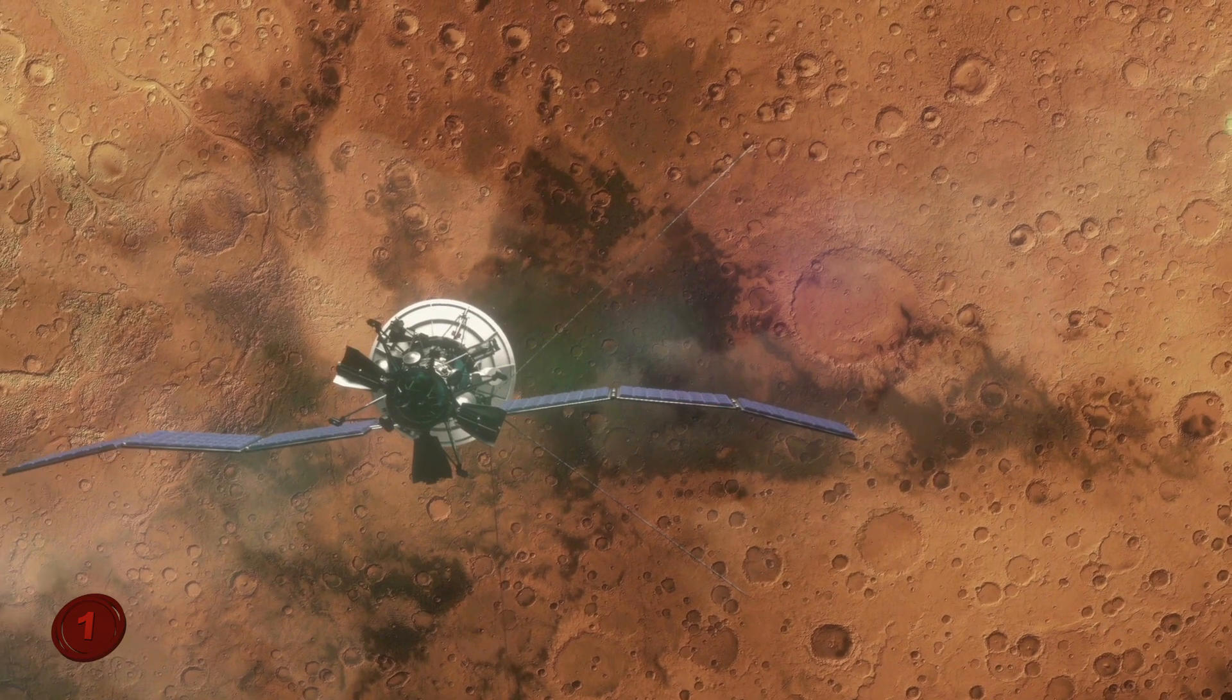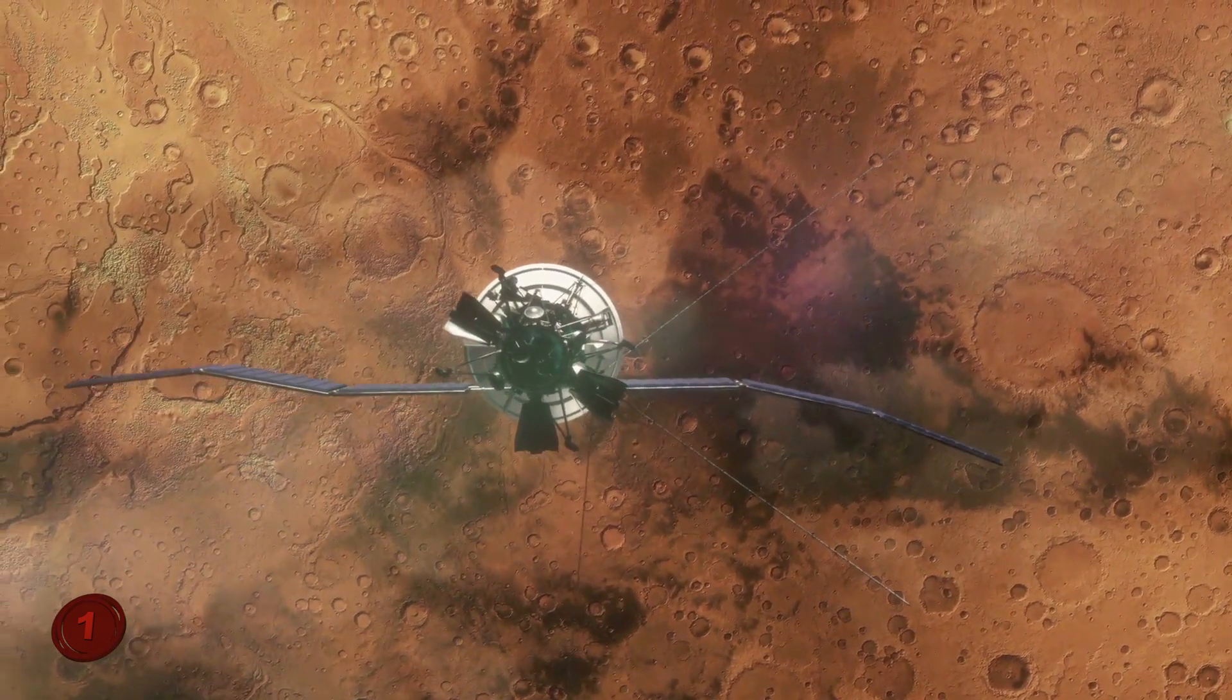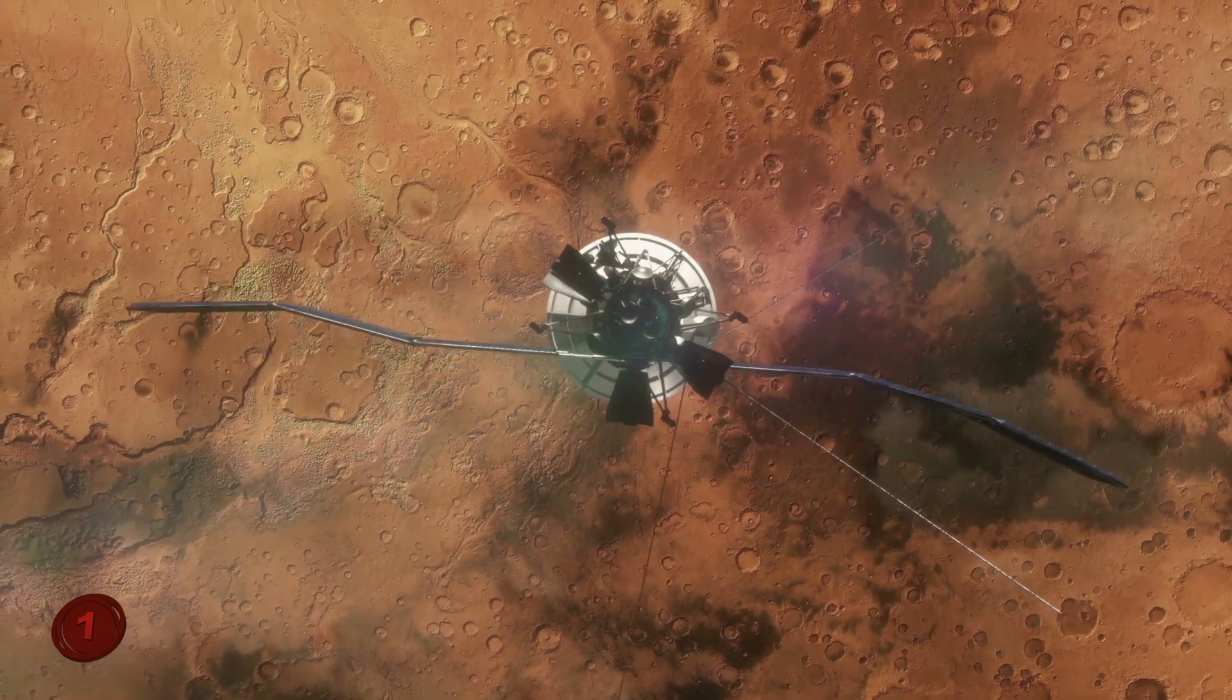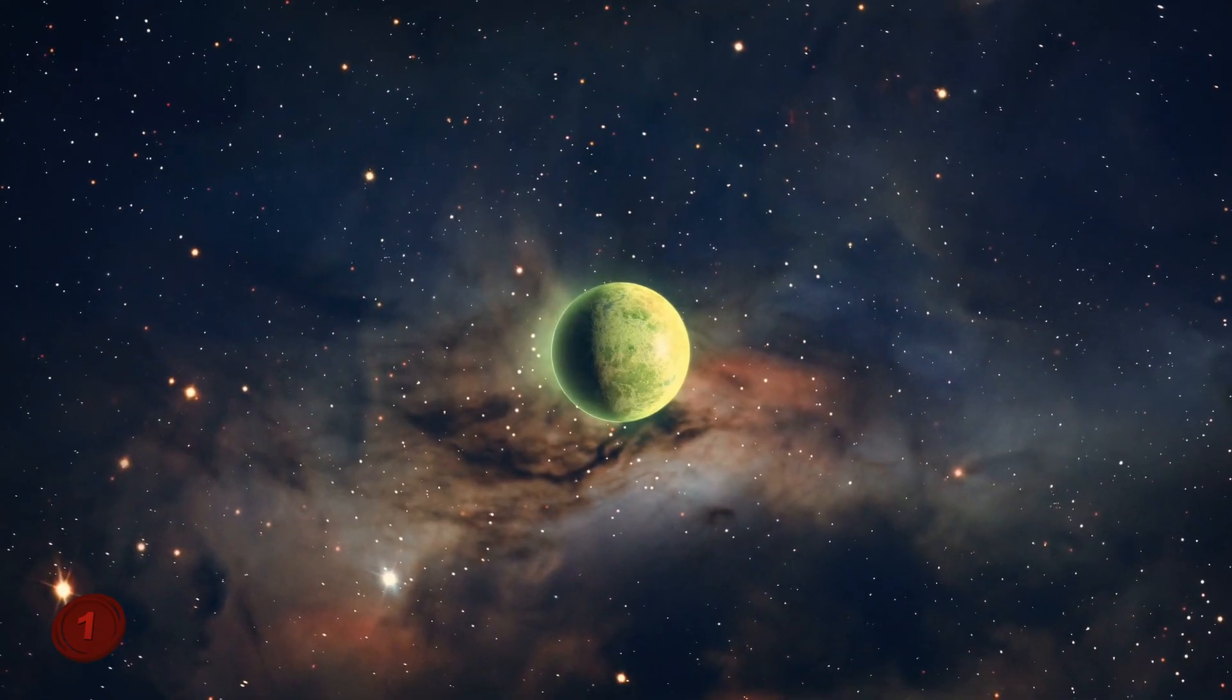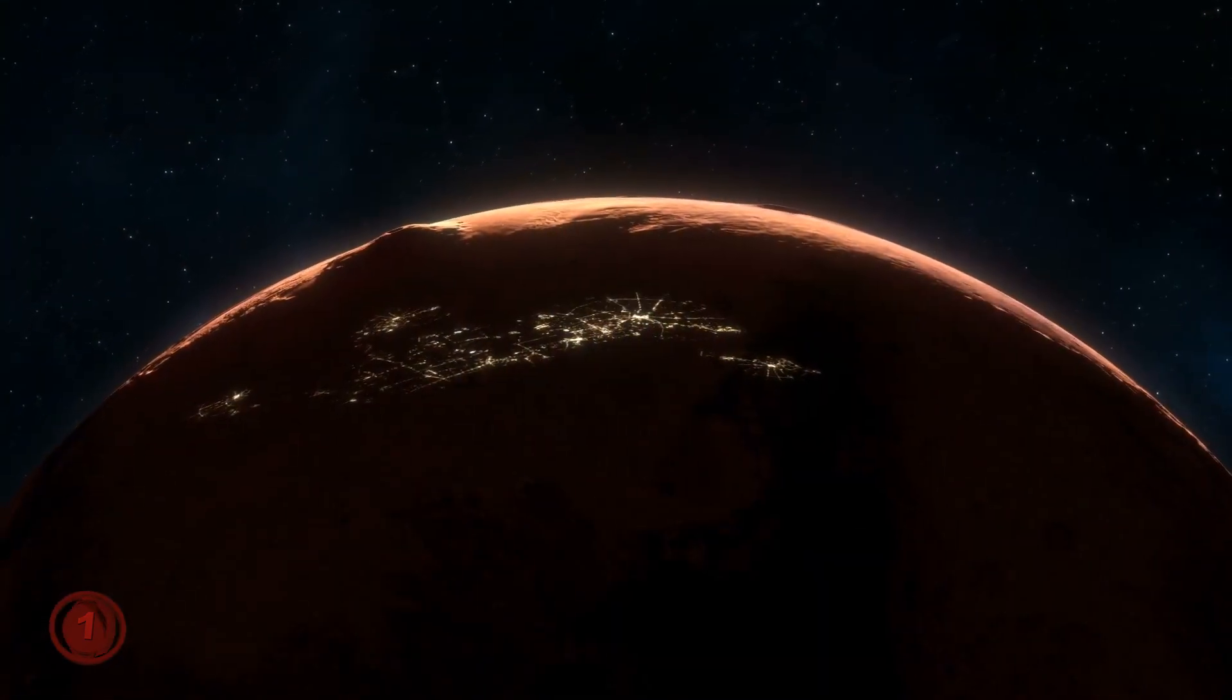And while satellites have taken pictures of other planets, there is no way that those cameras are powerful enough to see any life, let alone microscopic organisms. So it may be possible that there is life on other planets at this very moment. It's just we can't see it right now.